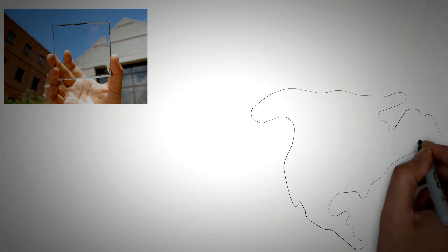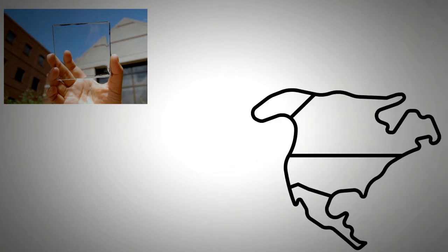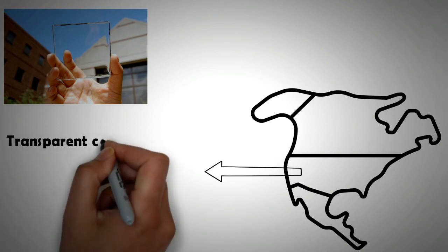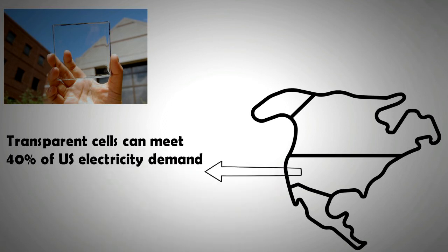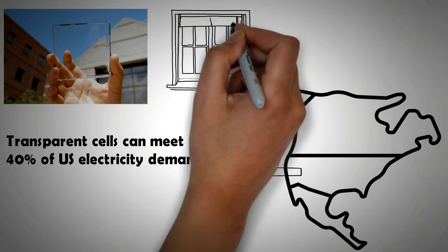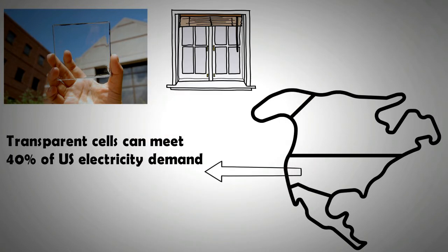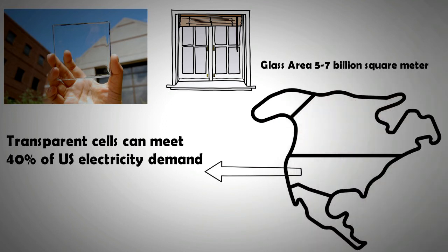Nonetheless, these cells still have a huge potential if seen as a replacement for normal glass. It has been estimated that if these cells were to replace windows in the US, they could provide as much as 40% of the total electricity the US consumes without requiring any additional land area. This means a huge drop in fossil fuel-based electricity. Note that glass-covered area has been estimated to be 5 to 7 billion square meters.